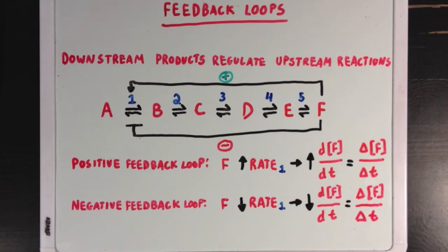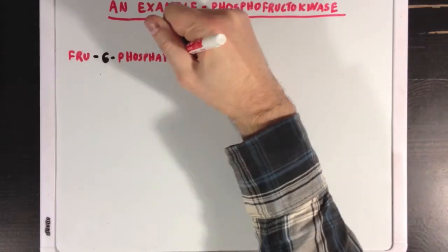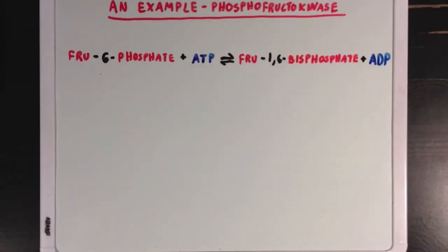Let's look at an example of a feedback loop, just to really drive home the point if you're still confused. Phosphofructokinase is an enzyme involved in glycolysis, and it catalyzes the conversion of fructose 6-phosphate and ATP to form fructose 1,6-bisphosphate and ADP.